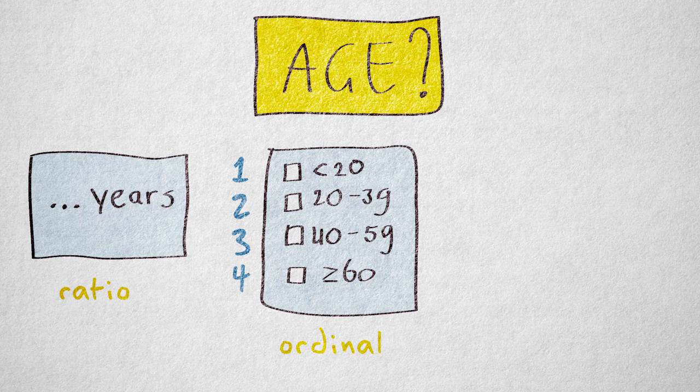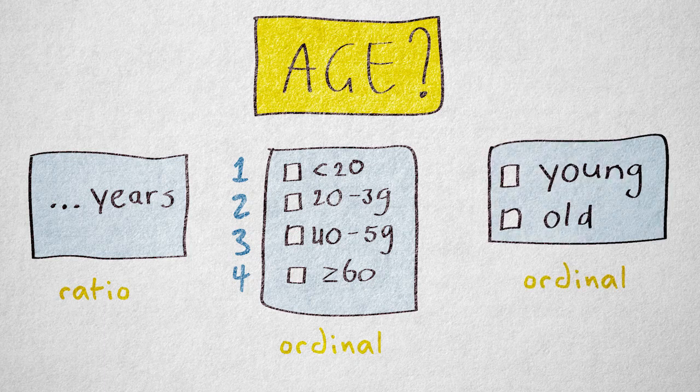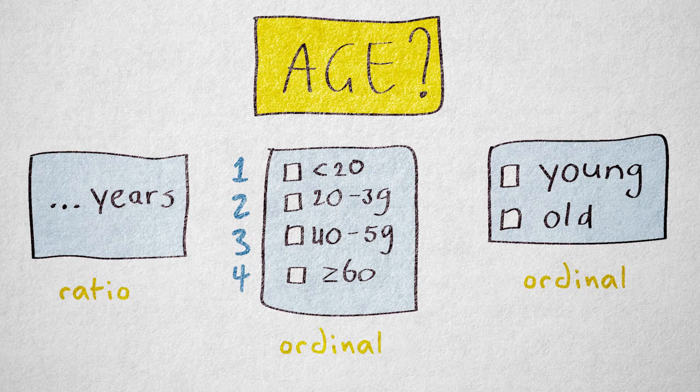We can say that people in a higher category are older, but not by how much. By categorizing the variable, we've lost the ratio and interval information.